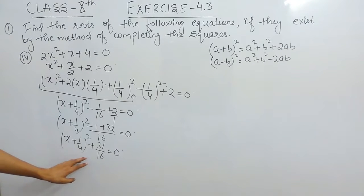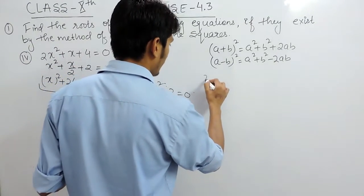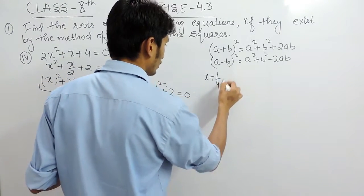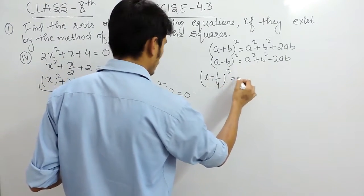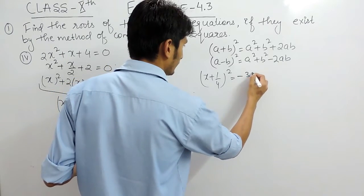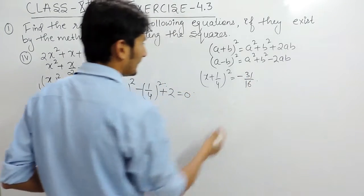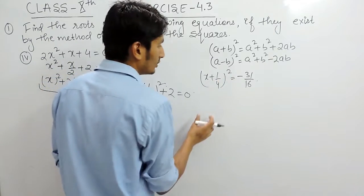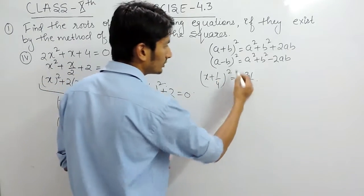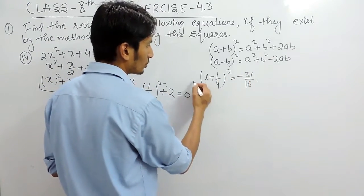And shifting this constraint on to this side so the equation will become x plus 1 upon 4 whole square equals to minus 31 upon 16. And if you want to remove the square you have to square root both the sides. So when you square root,